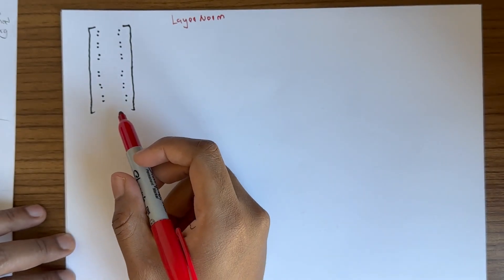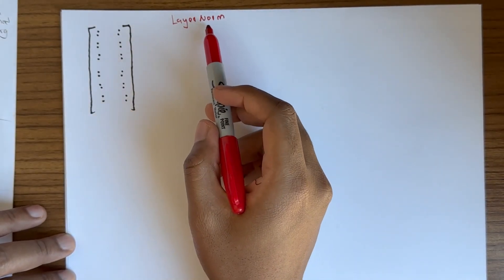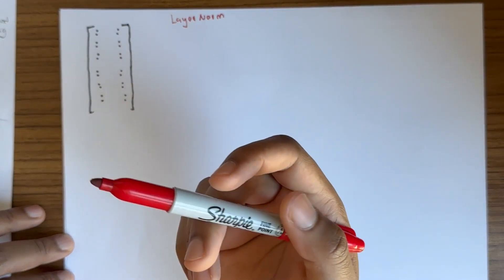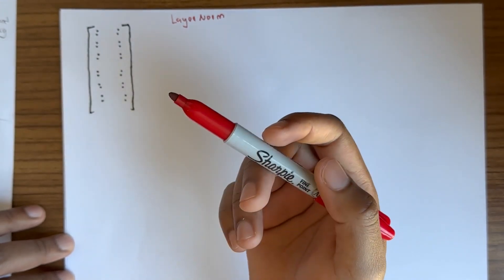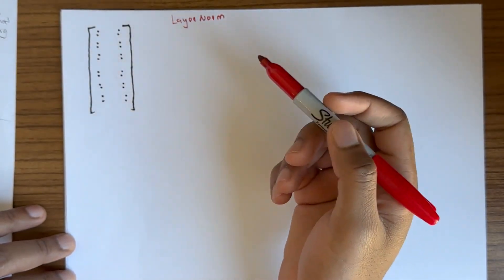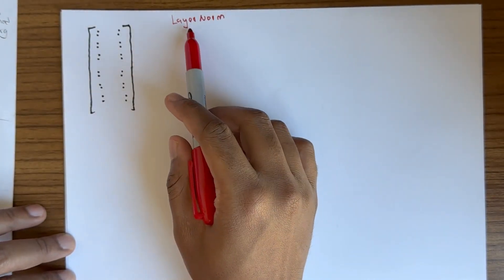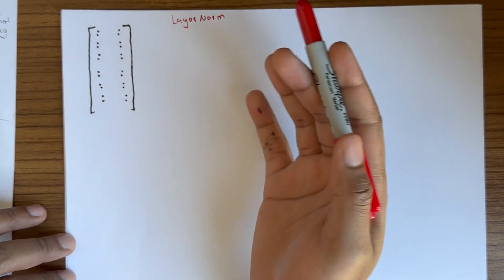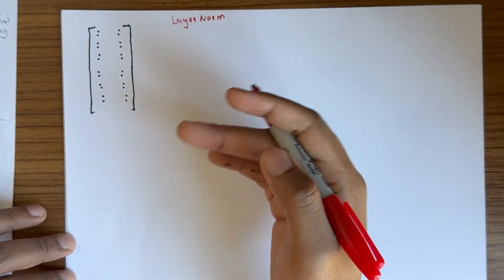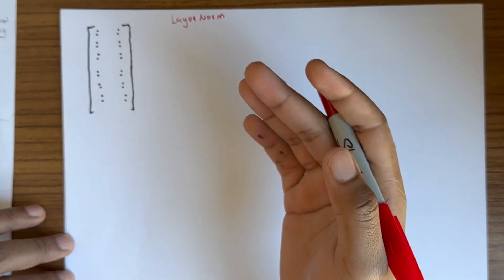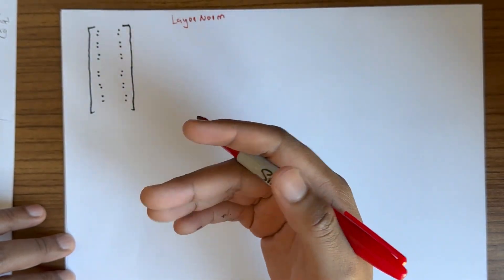Hi everyone. Today we'll be looking at layer norm. We have seen batch norm 1D and batch norm 2D. This is an important procedure usually used in transformers, RNNs, and LSTMs.